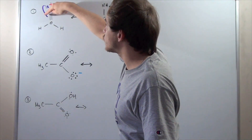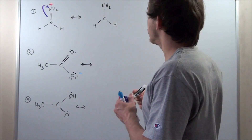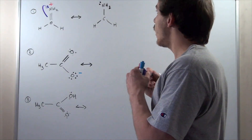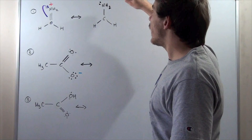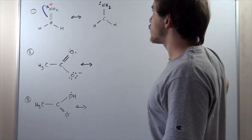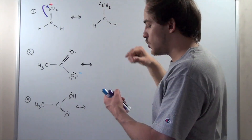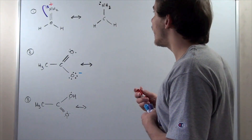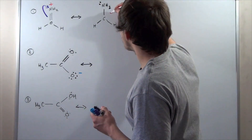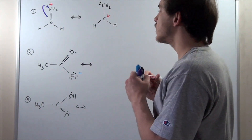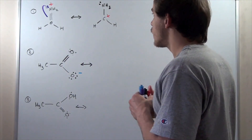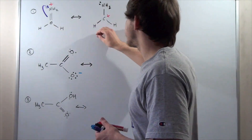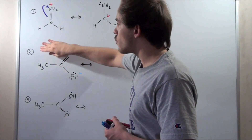These two electrons are being moved from here onto here. Now, what has happened is this N now has five electrons, and that means it has been neutralized to a neutral charge. But now this carbon has a positive charge, so let's draw a plus charge here. This concludes our resonant forms for this molecule — we have two major resonance forms.